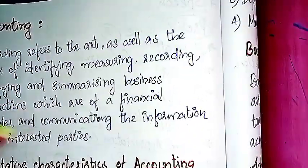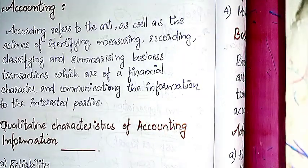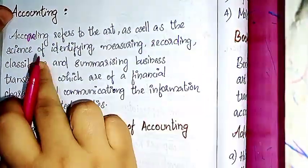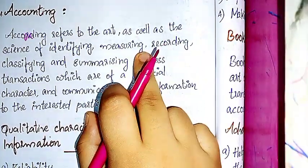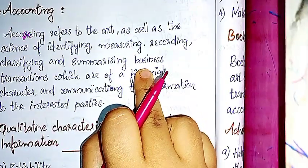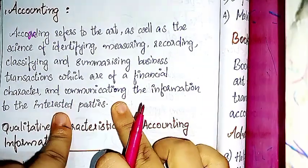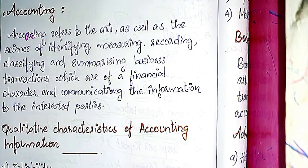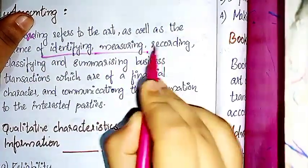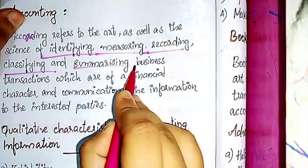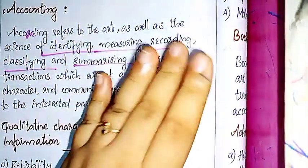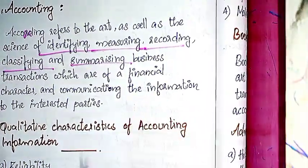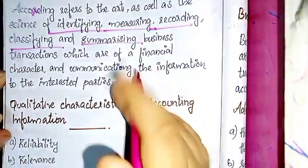First question: What does accounting refer to? Accounting refers to the art as well as science of identifying, measuring, recording, and summarizing business transactions which are of a financial character, and communicating this information to interested parties.